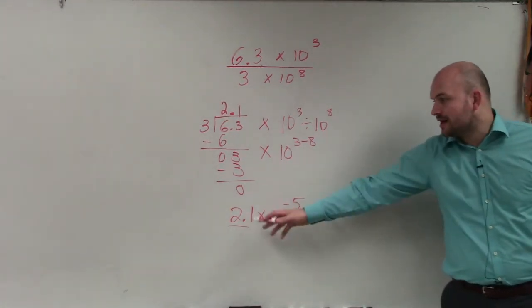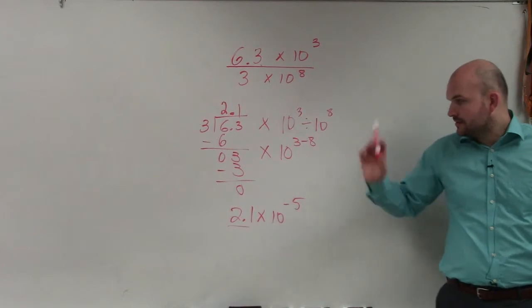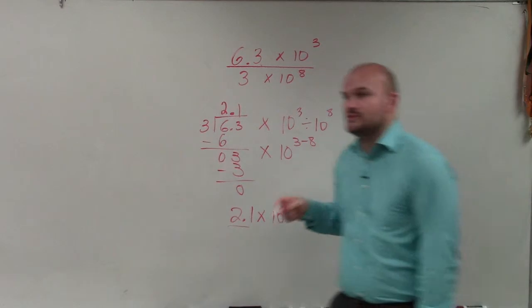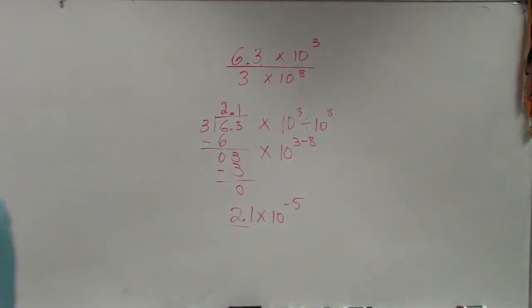So it's between 0 and 10, which works, and that's it. So just divide these and then subtract your powers when you're dividing them. OK?